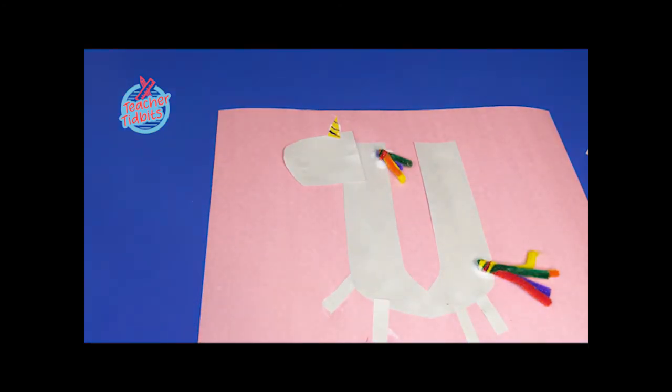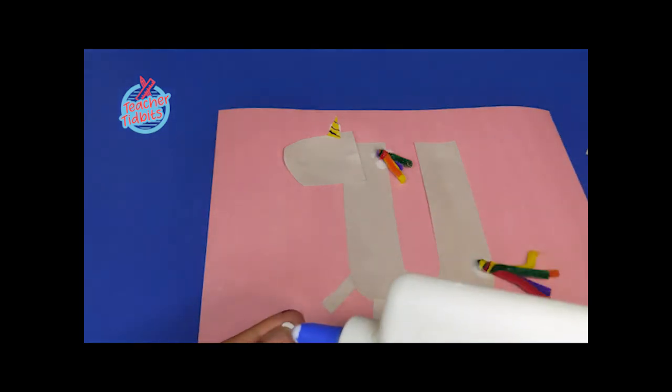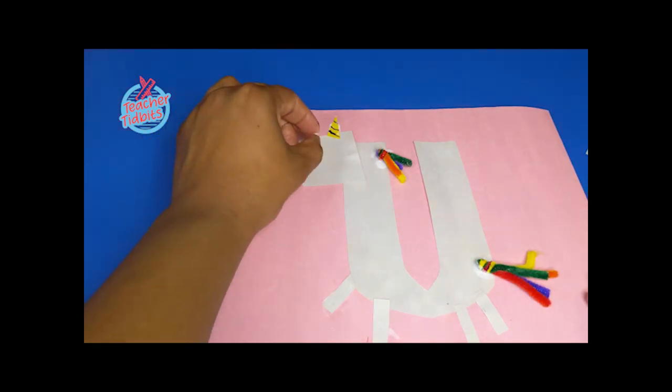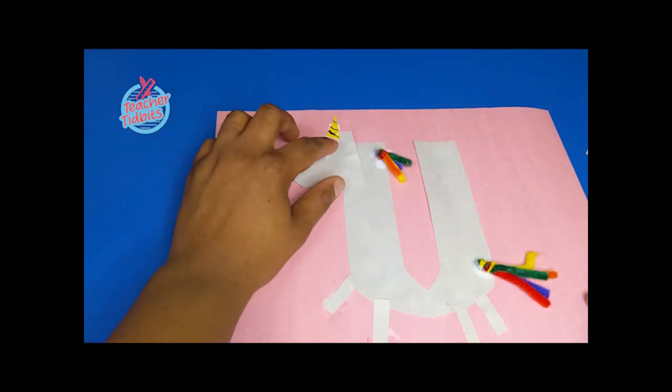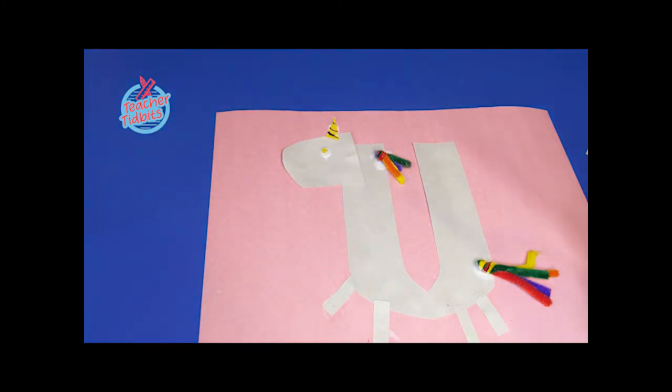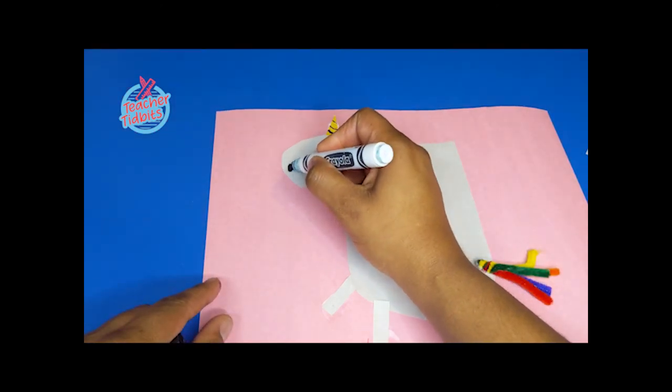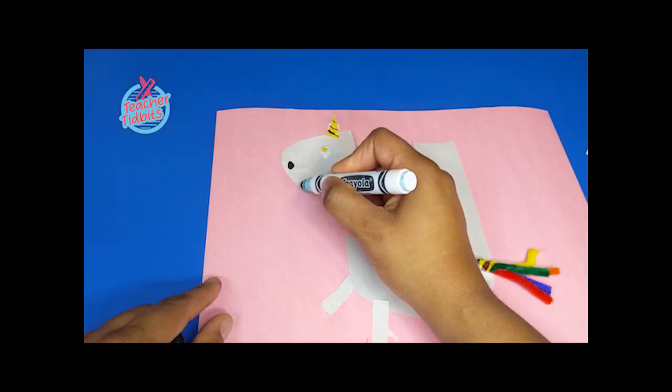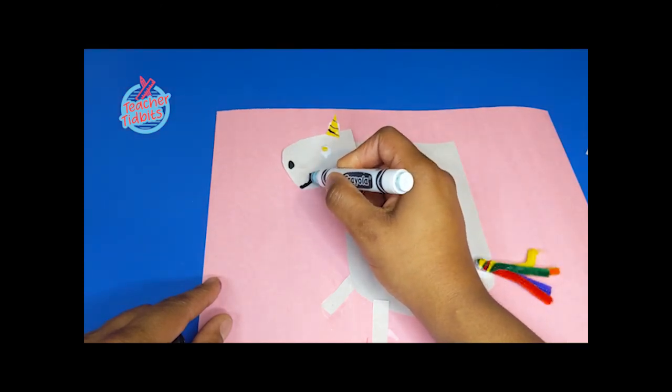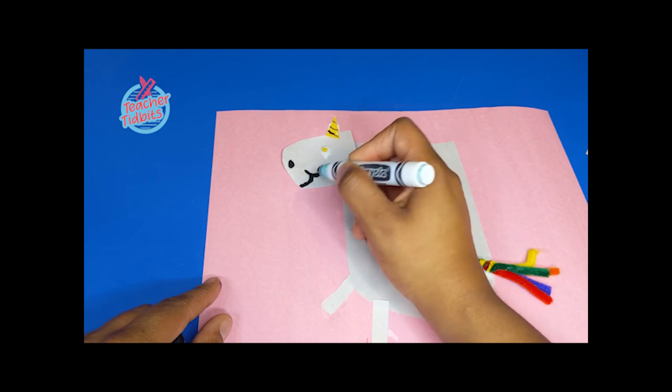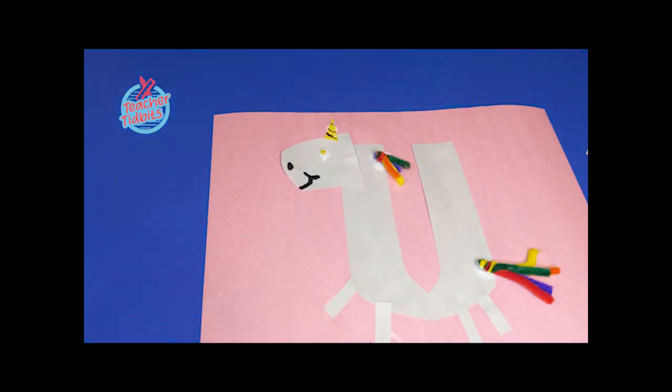And now I'm going to add my googly eyes. You guys remember we had our googly eyes and my unicorn's eye is going to be yellow. So I'm going to go grab a marker and let's add a few little details. So let's add a circle for the nose and then we'll add a curvy line for the mouth. I'm going to add some lines because my unicorn's happy.